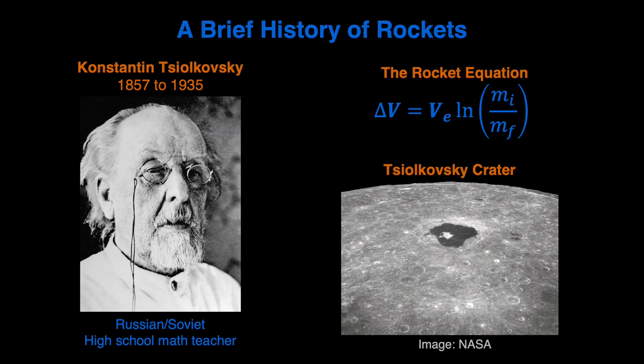I would like to talk about Konstantin Tsiolkowski, who was a Russian-Soviet high school math teacher. He pioneered much of the theory of rocketry. He's particularly known for the rocket equation, which is shown on the right. This equation is fundamental to rocketry and helps designers calculate the propellant required for a rocket for a given mass and for a given delta V, or change of velocity required.